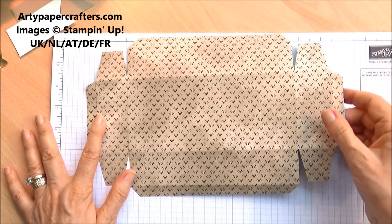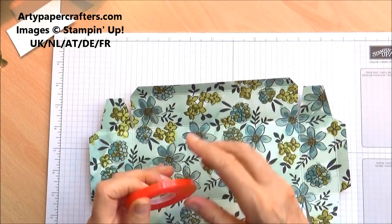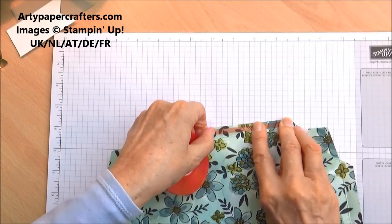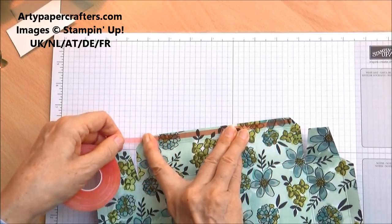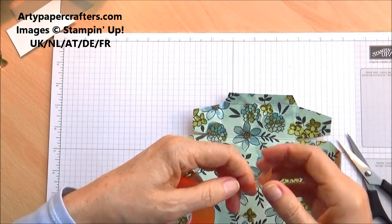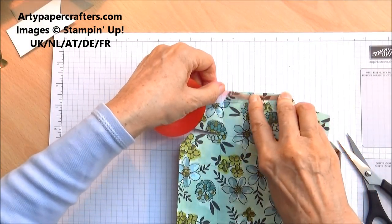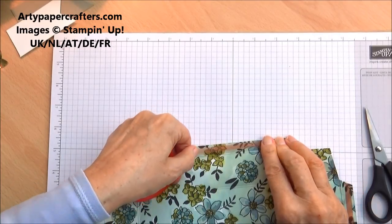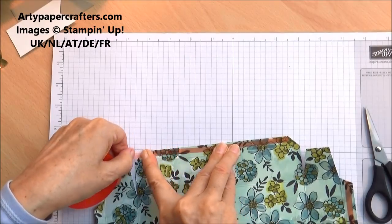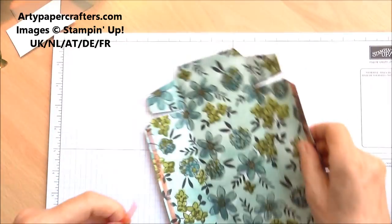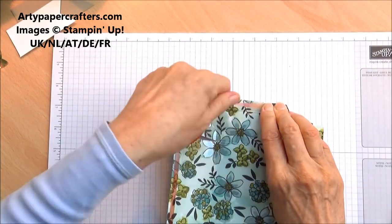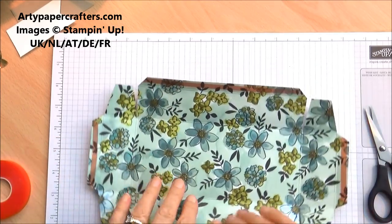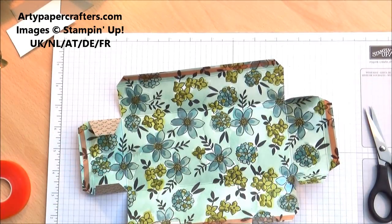Now we want some double-sided tape for these outside edges. It's a nice box this and it's big enough to hold really anything, more or less anything. You don't just have to put gift tags in it. So we're going to put some wet glue on these four tabs and I'm using Tombow.